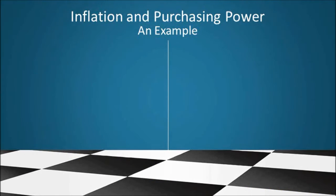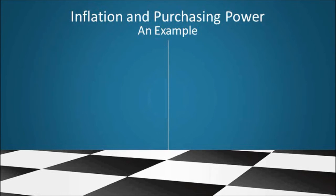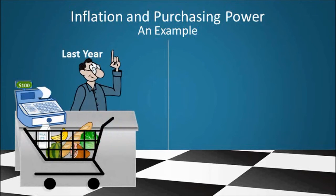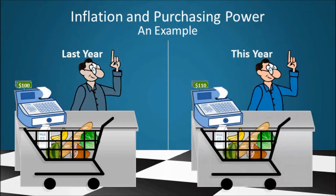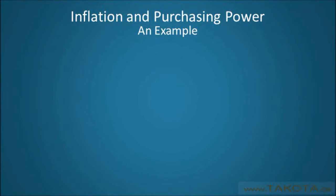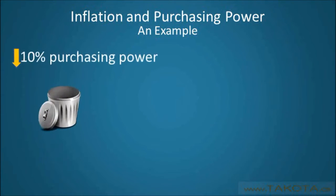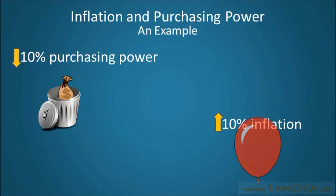From this example, it can be seen that while Mitchell himself does not have less money, he is, in relative terms, poorer than he was last year. What he once could purchase for $100 can now only be bought for $110. Basically, his purchasing power has declined as a result of general increases in the price of goods, in this case, groceries. In this example, Mitchell's purchasing power has decreased by 10%, indicating an inflation rate of 10%.